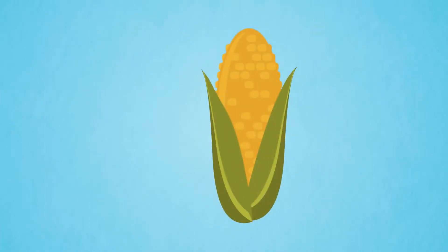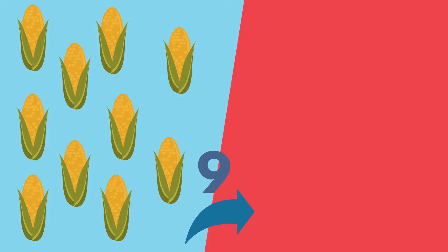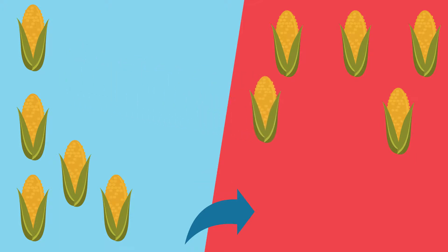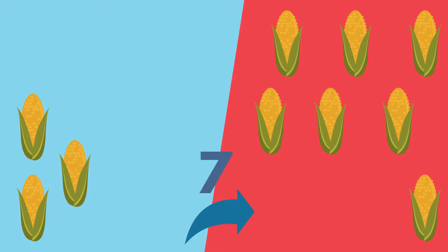Corn. Move 9 corn to red. 1, 2, 3, 4, 5, 6, 7, 8, 9. 9 corn, good job!